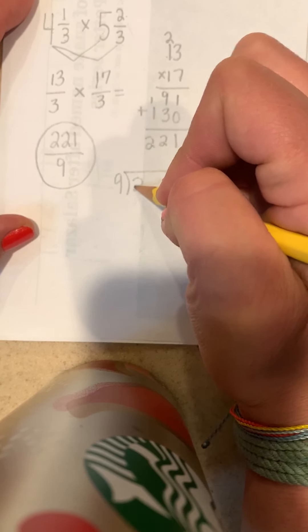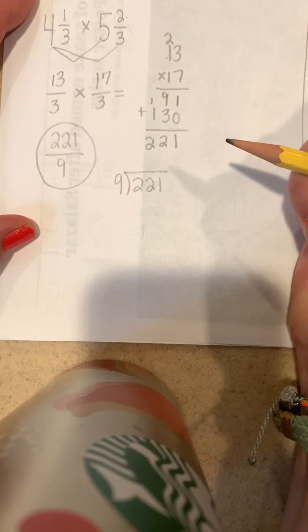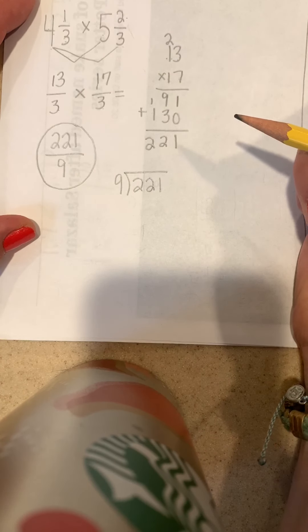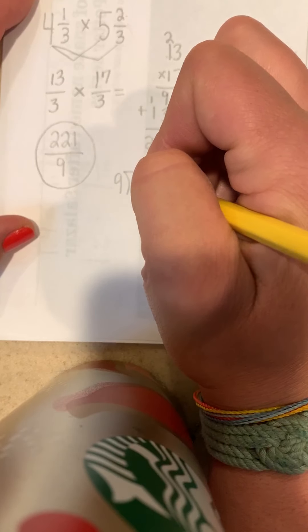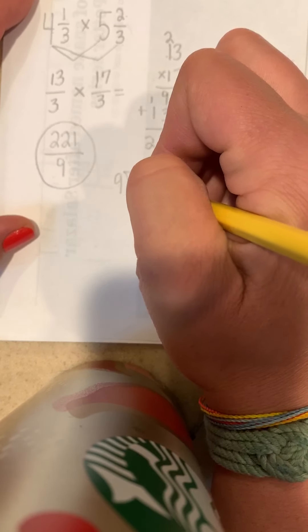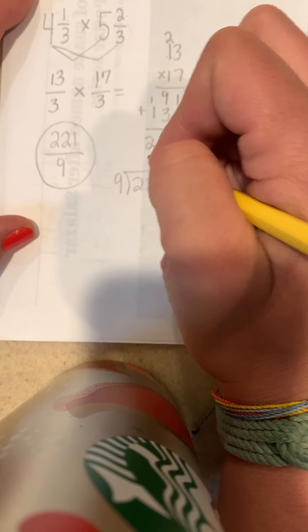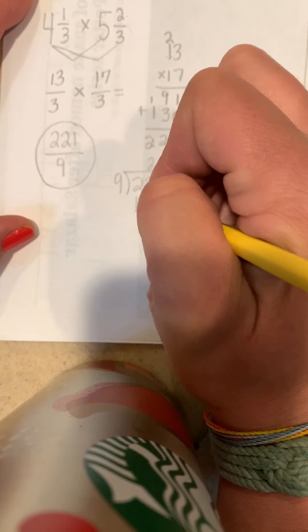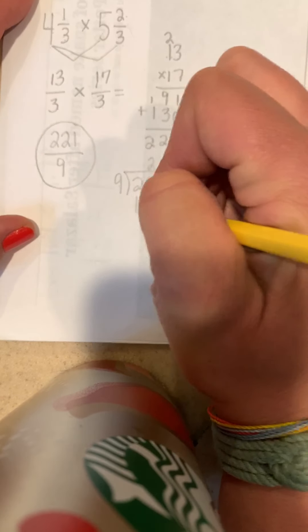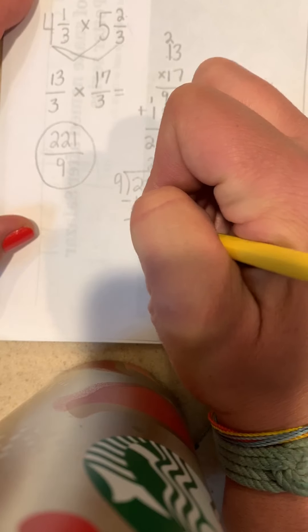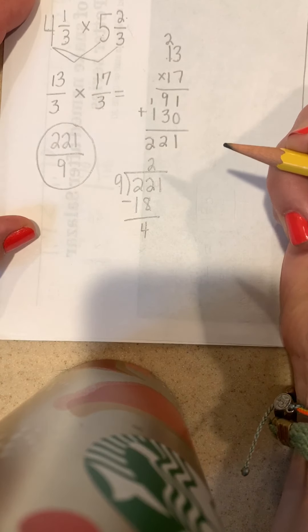Next I'm going to divide 221 divided by 9. So let's see, 9 into 22, 9 can go in 2 whole times without going over and I got as close as 18. I'm gonna find the difference, 4 away.